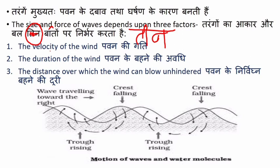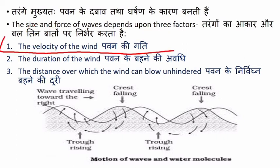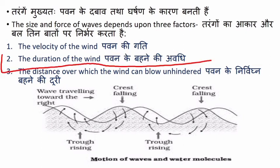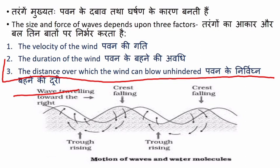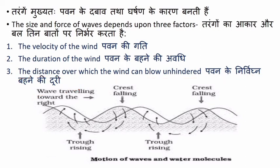The size and force of waves depends on three factors: first, the velocity of the wind; second, the duration of the wind — meaning how many days or how long it blows; and third, the distance over which the wind can blow unhindered — पवन के निर्विघ्न बहने की दूरी, meaning how far the wind travels without obstruction.